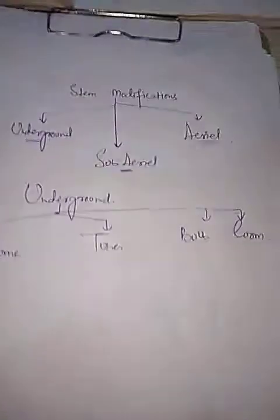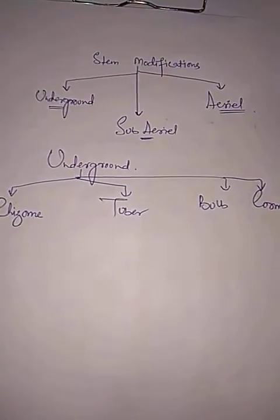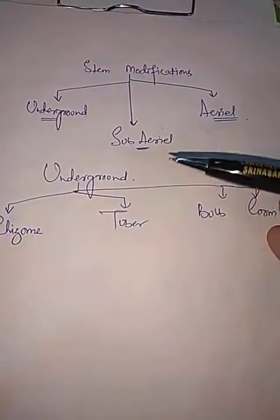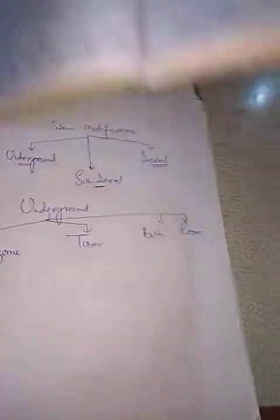Just as we studied root modifications in the morphology of root, we will now study stem modifications. As a quick revision: stem is the aerial or above-ground portion of the plant, it is differentiated into nodes and internodes, buds and leaves are present, fruits are present, and the stem develops from the plumule. We also discussed the types of stem such as caudex and columnar.